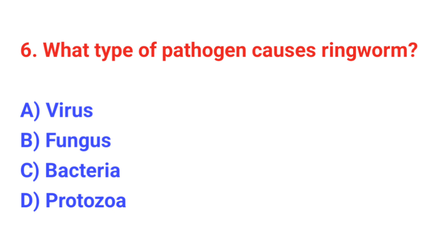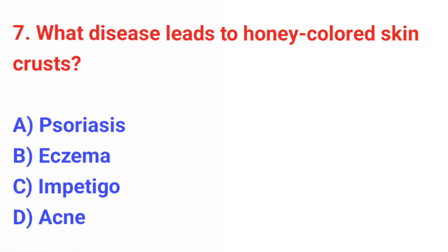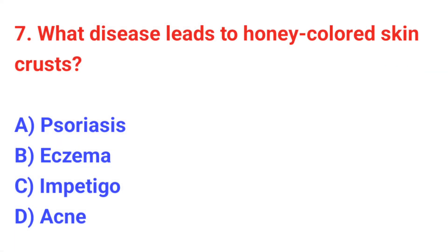Question number 6: What type of pathogen causes ringworm? The correct answer is B: Fungus. Question number 7: What disease leads to honey-colored skin crust? The correct answer is C: Impetigo.